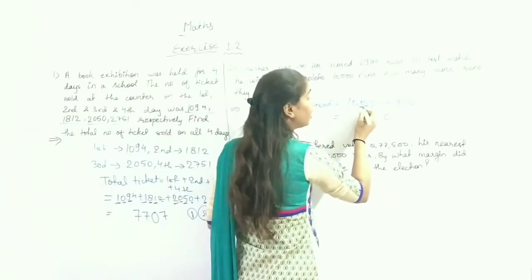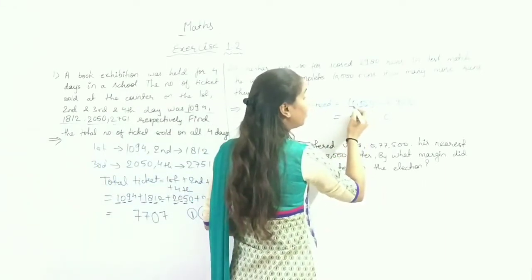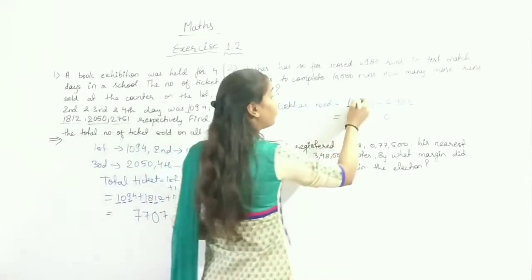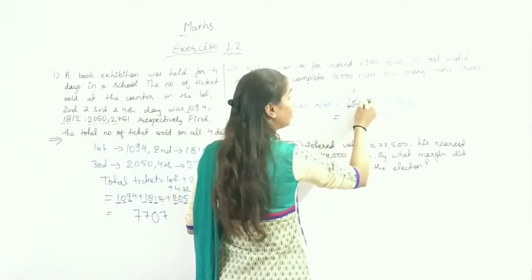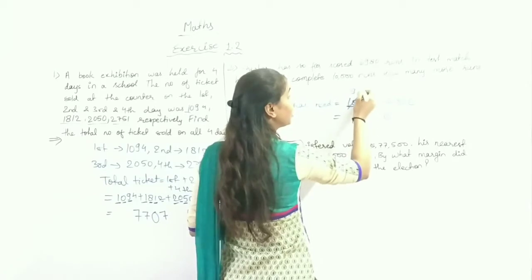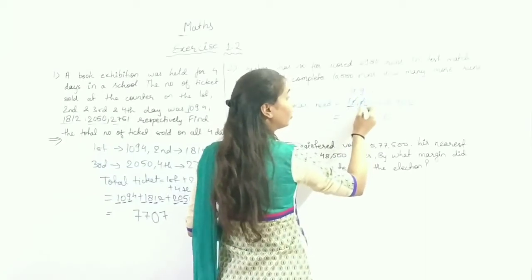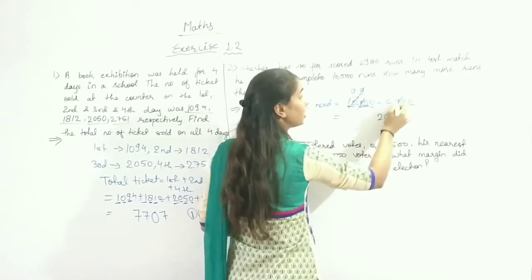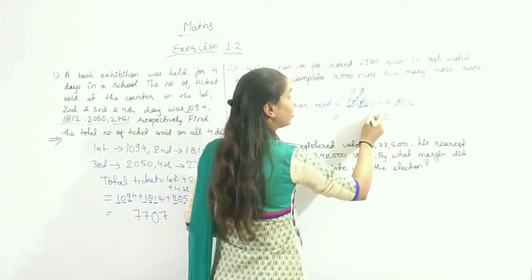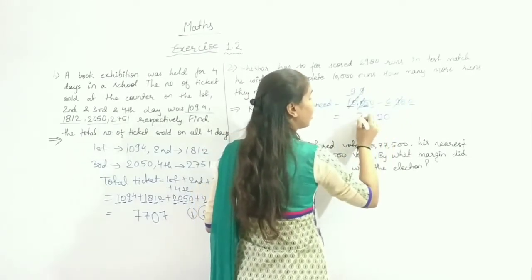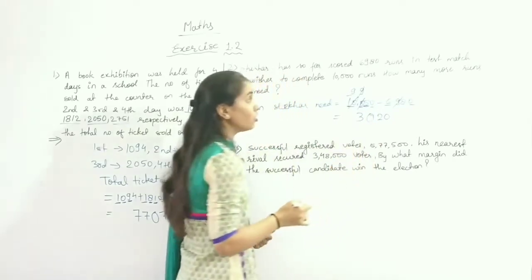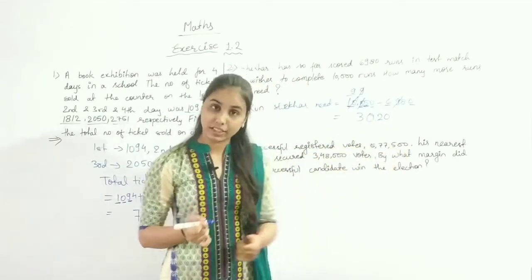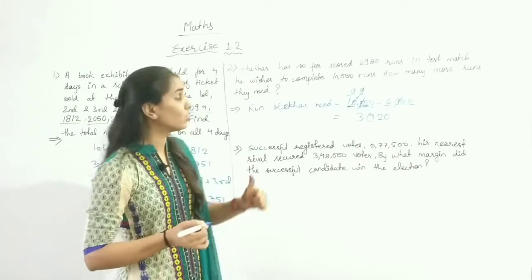Runs Shekhar needs equals 10,000 minus 6,980. Working through the subtraction with borrowing: the answer is 3,020. Note it down in your notebook.